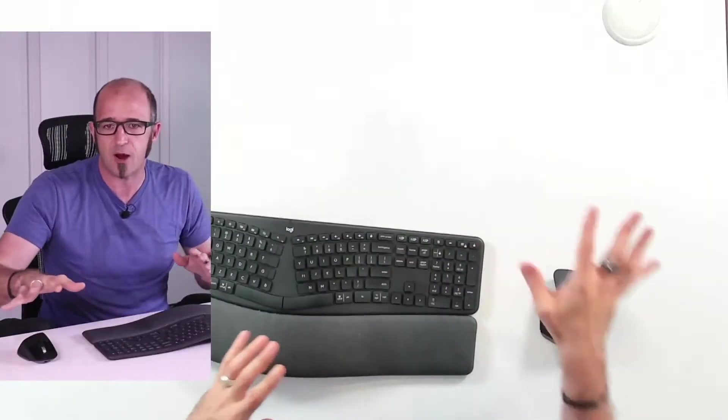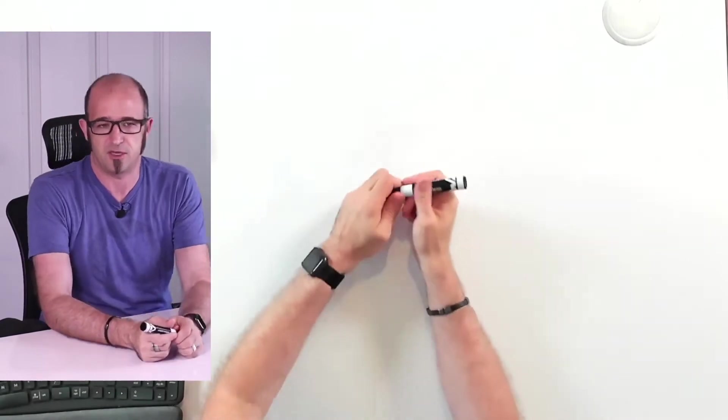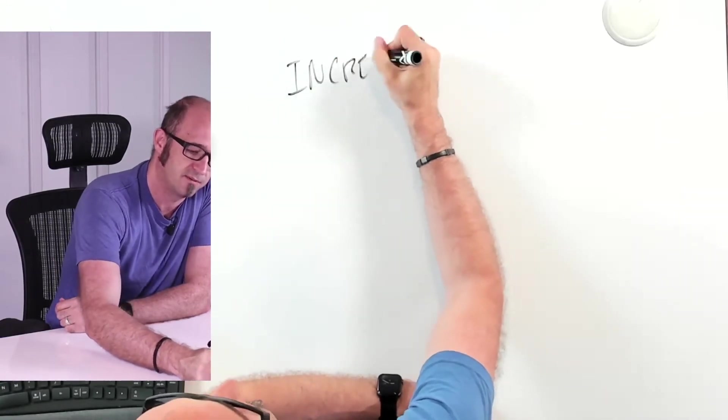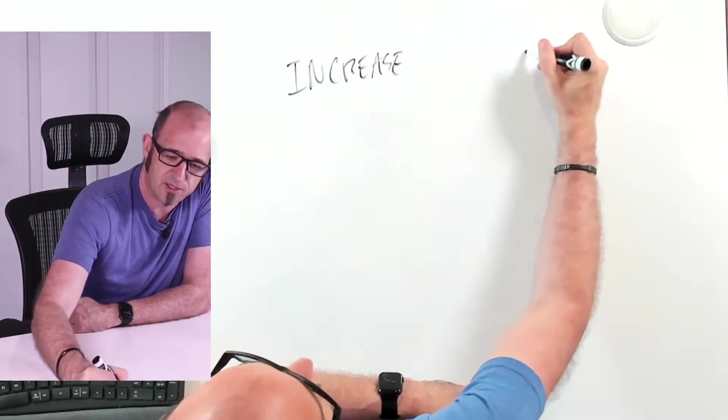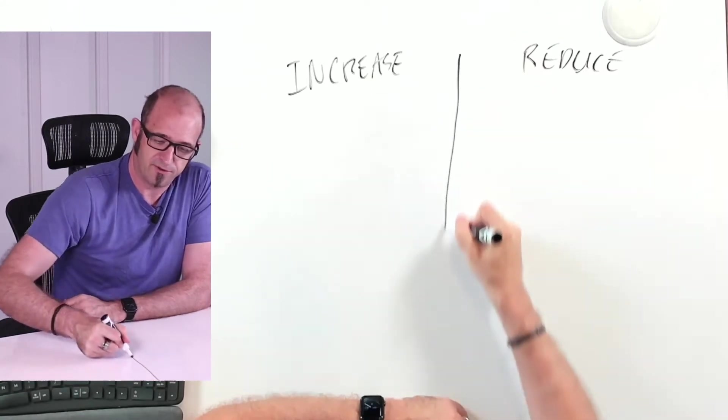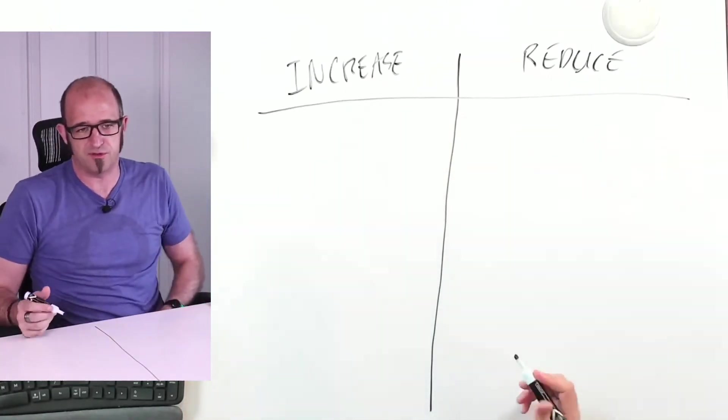So what does this mean for us? How do we use this information to our advantage? I just wanna reiterate, after you've watched this video, go and watch my other video about how developers like to learn and solve problems because this is super interesting data as well. But what I wanna do is sketch out some solutions that you can put into practice today that will really help you make the most of this information. I'm gonna break this into two sections: things that you should increase and things that you should reduce.